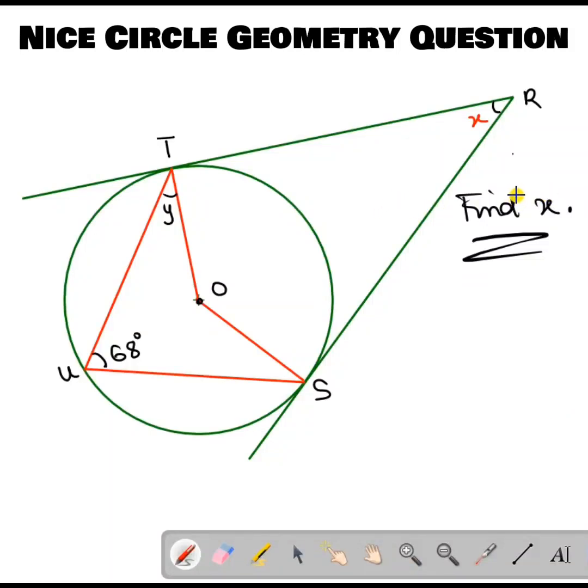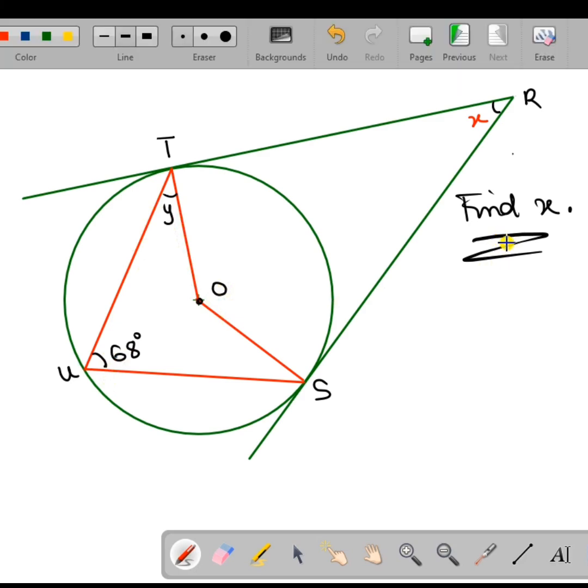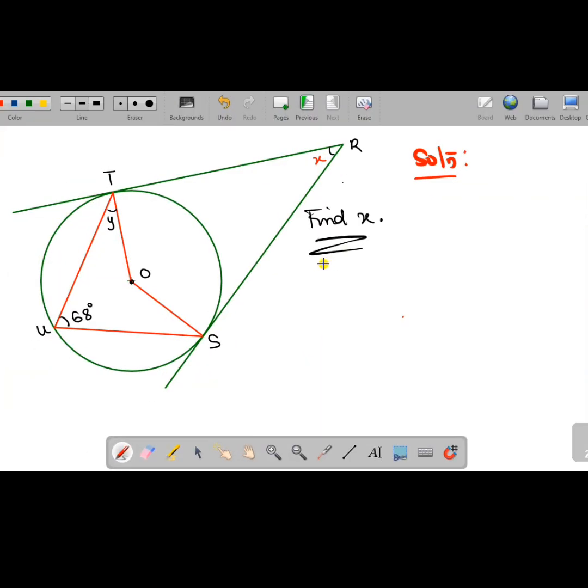Hi everyone, welcome to this channel. Here we will look at this very beautiful question from circle geometry. We are given a circle TUS with two tangents TR and SR, or RT and RS, that meet at point R. They formed an angle x, and there is a line from this tangent to U forming an angle 68. Here is y, and this is the center O of the circle.